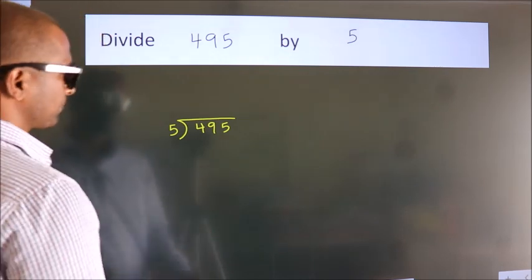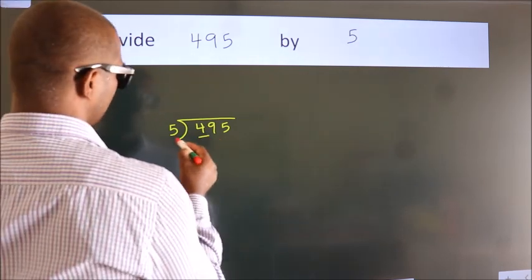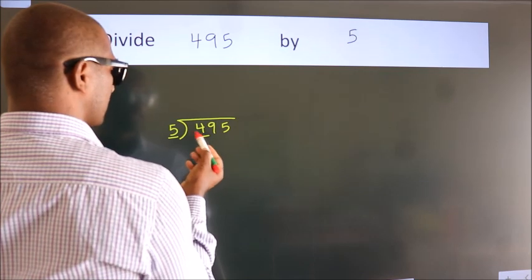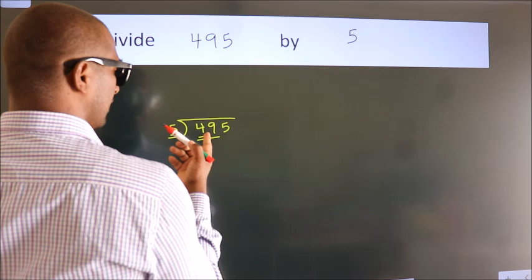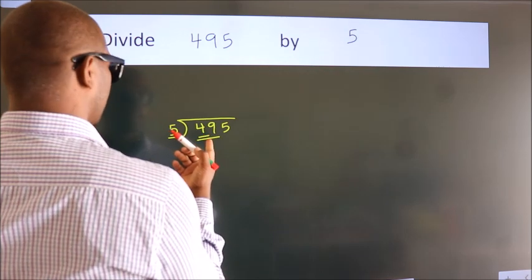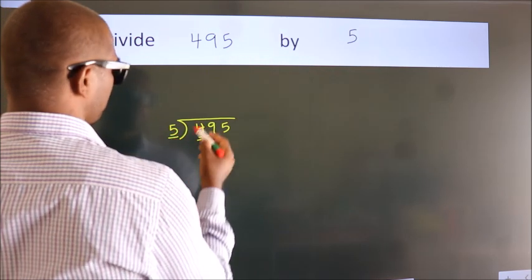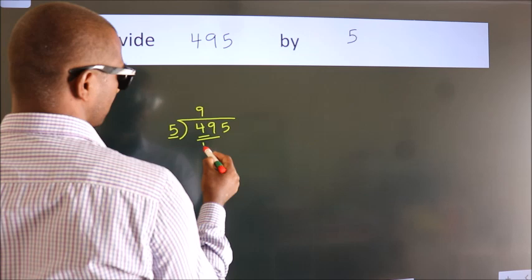Next. Here we have 4, here 5. 4 is smaller than 5, so we should take 2 numbers, 49. A number close to 49 in the 5 table is 5 nines, 45.